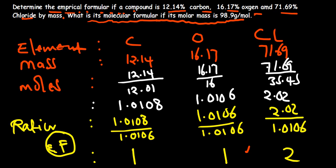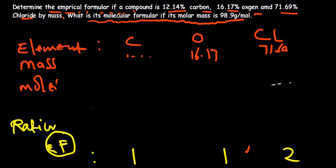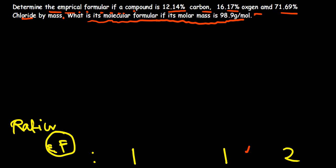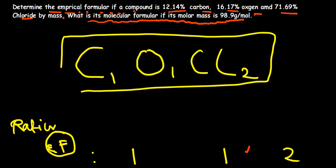To write our empirical formula now — let me create some space. Our first element was C and it has 1 as its ratio. Then we add oxygen, it had 1 again. Then we add chlorine, it had 2. So this gives us our empirical formula. That's how we find the empirical formula.